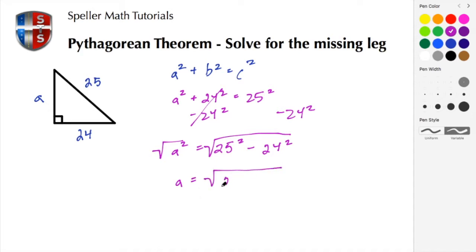Now we need to begin to evaluate the two numbers that are squared. 25 squared is 625, and 24 squared is 576.